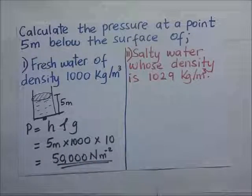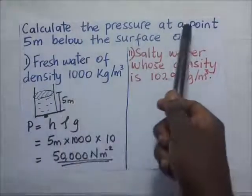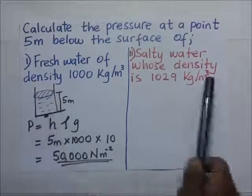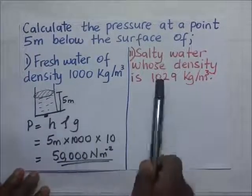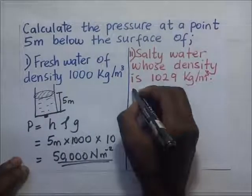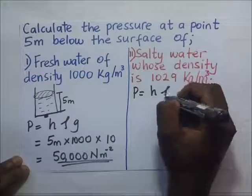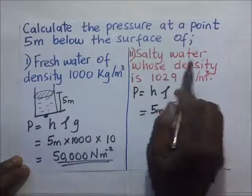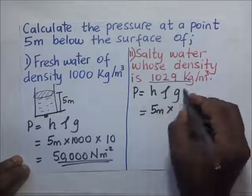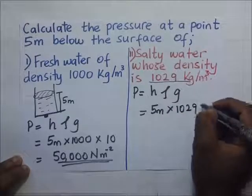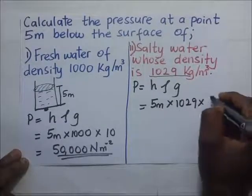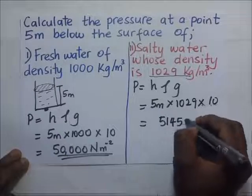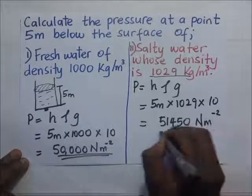The second example asks us to calculate the pressure at a point five meters below the surface of salty water whose density is given. The sketch is the same — we still want the pressure five meters below the surface, but now we are dealing with salty water. Pressure equals height times density times gravity: five meters times 1029 kg/m³ times ten, giving us 51,450 newtons per meter squared.